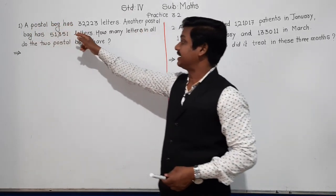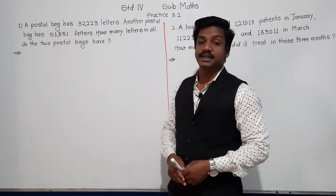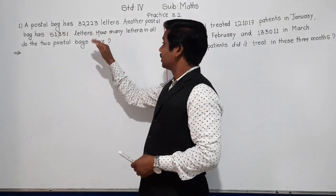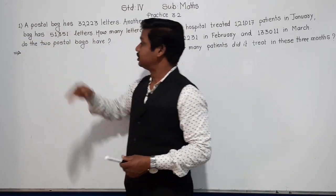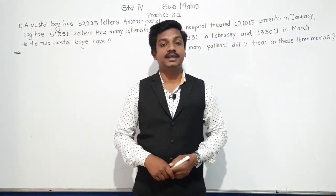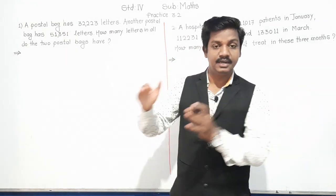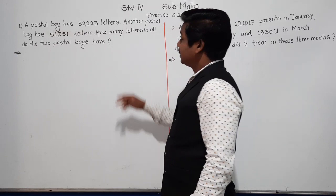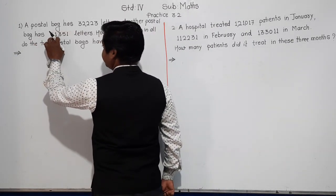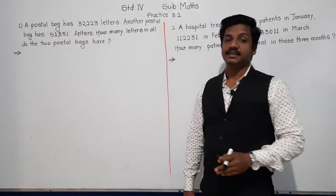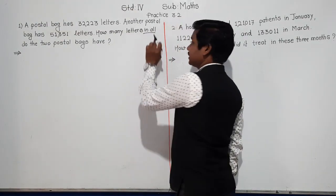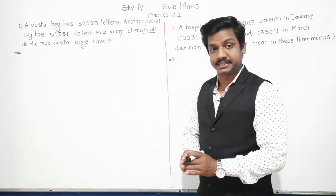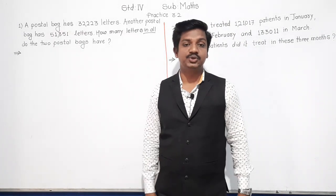Question number 1. A postal bag has 32,223 letters. Another postal bag has 51,351 letters. How many letters in all do the two postal bags have? In this word problem, there are two postal bags with some letters. 'In all' means together — that is the keyword here. So, how many letters are there in both the postal bags? That we have to find, and the operation we have to do here is addition.